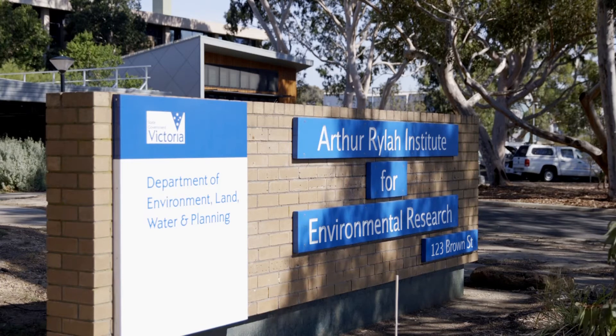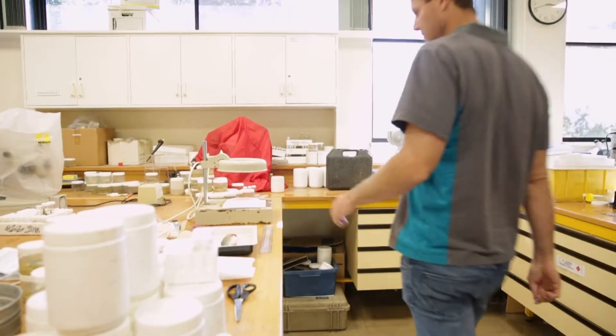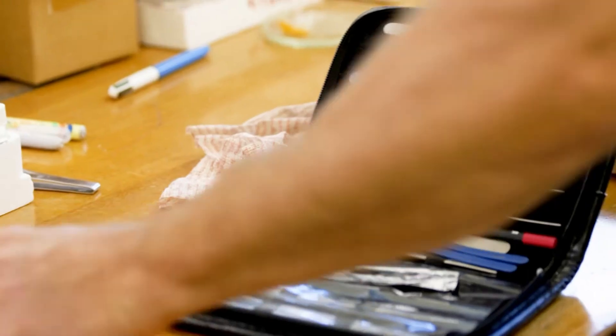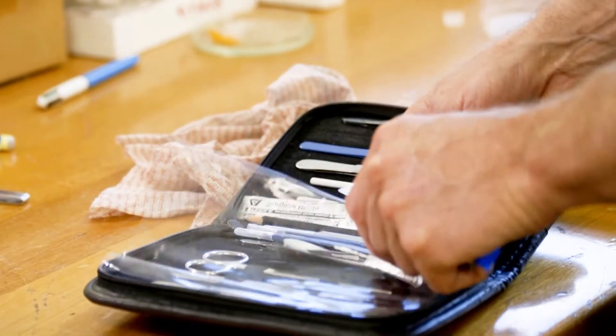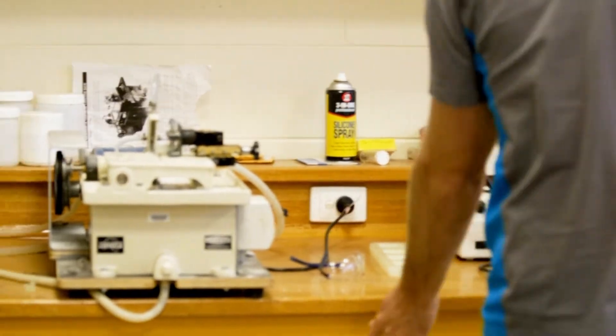Today we're going to run through one of the tools that we're using for one of our monitoring projects, which is the Victorian Environmental Flow Monitoring and Assessment Program. One of the major objectives of the VEFMAP program is looking at the response of fish to flows, and one of the tools we're using to do that is using ear bones also called otoliths.